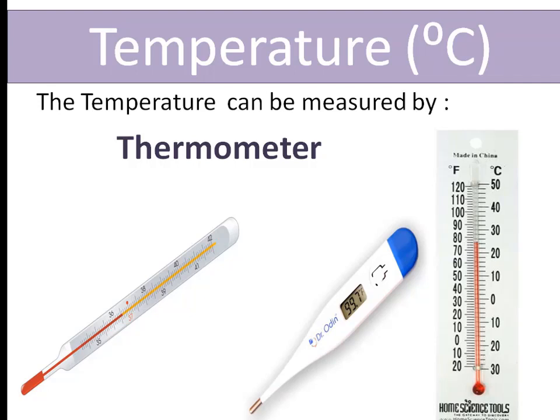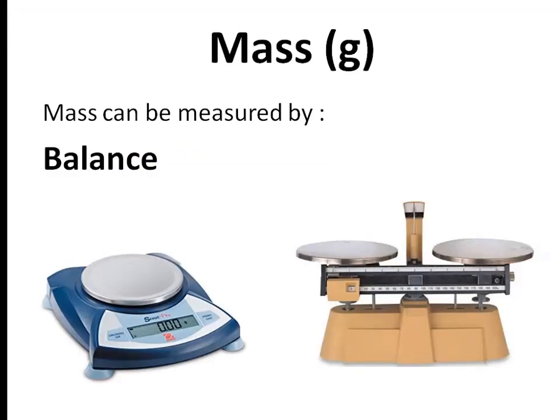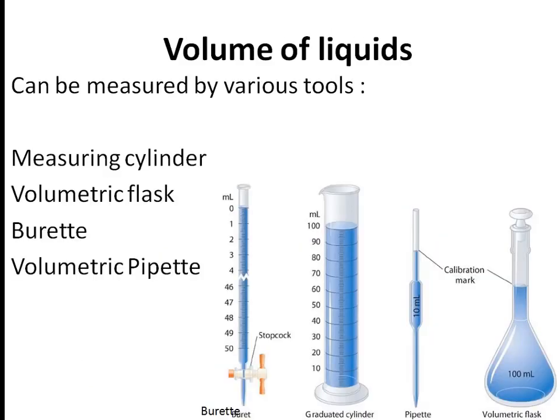Mass can be measured by balance. We have different shapes and types of balances — we have electrical or digital balance and we have double pan balance. The volume of liquid can be measured by different tools like volumetric flask, pipette, measuring cylinder, and burette.